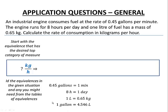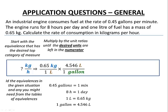We start with the equivalence that has the desired top category — kilograms, which is a mass. The equivalence with mass is 0.65 kilograms per liter. Choosing that as a starting point, reverse engineering from what we want, gives a good springboard. Next, I need to get rid of liters, so I multiply by the unit ratio from our table of equivalences — 4.546 liters per gallon — and the liters go away. Then I get rid of gallons using the 0.45 gallons per minute equivalence, and the gallons disappear.